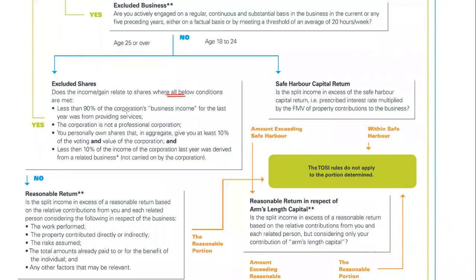First off: services business. I don't believe — and this is my interpretation, I could very easily be wrong here, and this ties into my comment earlier about tax advice — I don't believe that an auto dealership would be considered a services business. Now maybe if the majority of the revenues for the business are from the mechanics in the back, that might be a services business, but I would suggest that for most car dealerships that's probably not going to be the case. Let's assume, at least for the time being, it's not a services business.